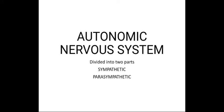The autonomic nervous system innervates structures within the cardiovascular, pulmonary, endocrine, exocrine, GIT, genitourinary, and central nervous systems. It also influences metabolism and thermal regulation.